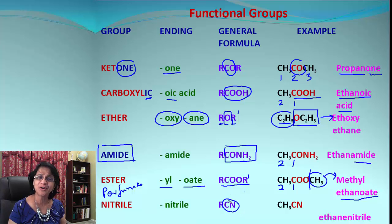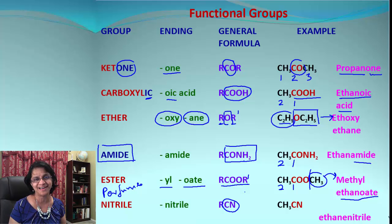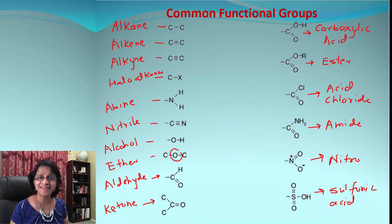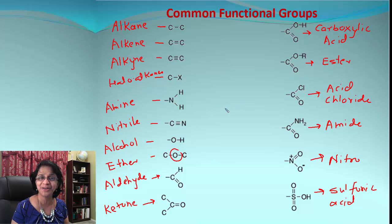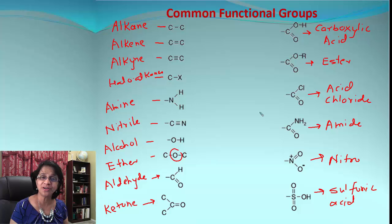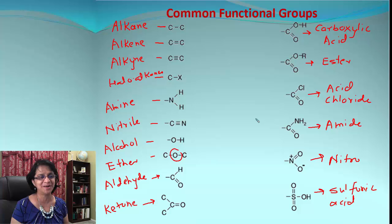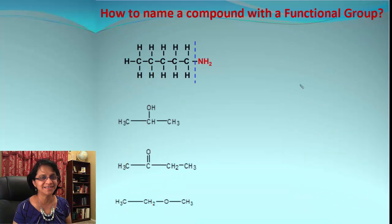The last one is nitrile, which corresponds to the C≡N cyanide group — in organic chemistry we call it nitrile, so that becomes ethanenitrile. To summarize, you should be able to identify functional groups in a given organic molecule and make sure you are counting the carbon atom that could be part of your functional group.